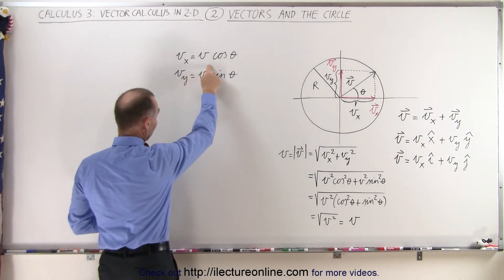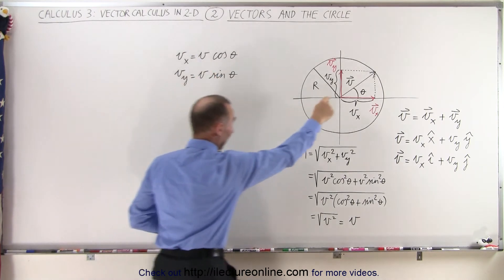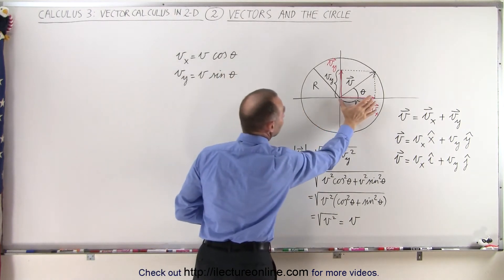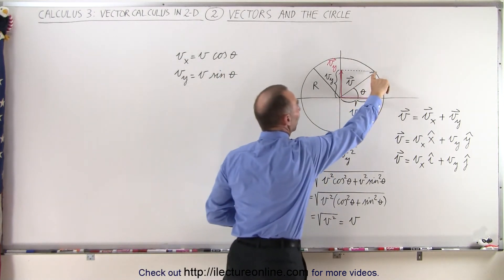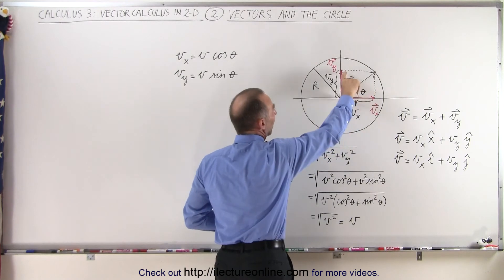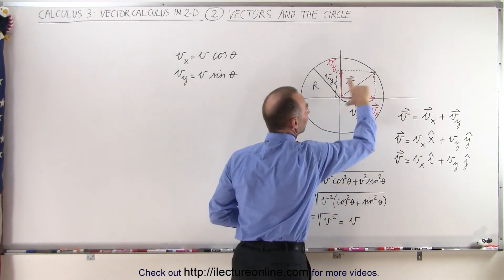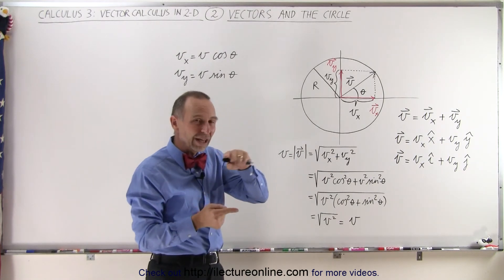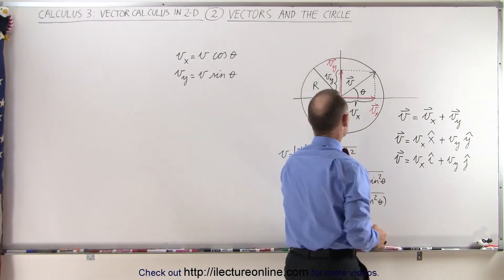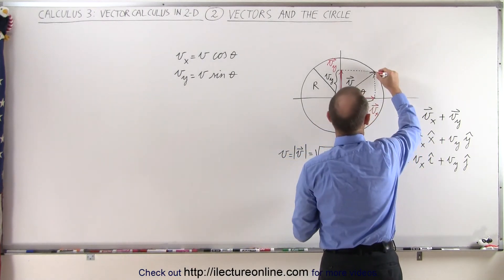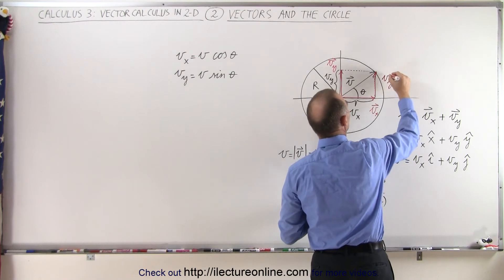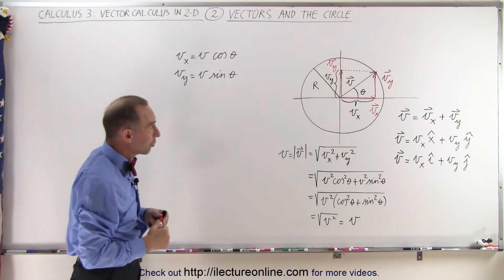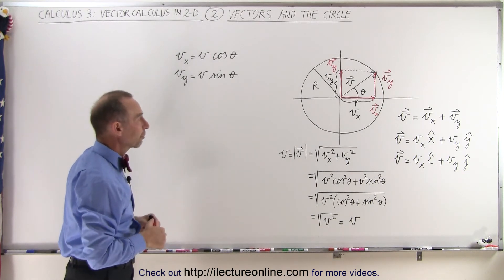V sub x and v sub y can be represented as the magnitude of the hypotenuse — which is the magnitude of vector v — times the cosine of the angle to find the x component, and times the sine of the angle to find the y component. It doesn't matter if we place the vector here or there; vectors can be moved anywhere as long as the magnitude and direction don't change. In essence, we could have drawn v sub y over here, and it doesn't make any difference. There you can clearly see it's part of a right-angle triangle, so we can use the Pythagorean theorem and the trigonometric functions.